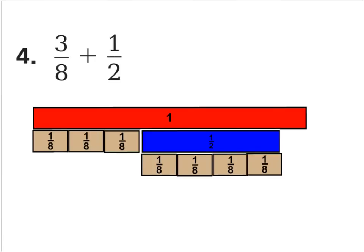Let's skip to question 4, which says 3/8 plus 1/2. You can see 8 and 2 are different denominators. I have a fraction bar here that's one whole, and I went ahead and put down 3/8 — 1/8, 2/8, 3/8 — and 1/2. This shows me that the sum is still going to be less than one whole because it doesn't go beyond one whole.